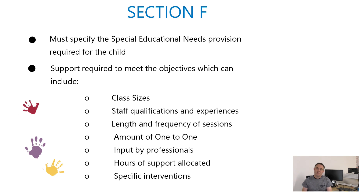The kinds of things that can be specified in section F include the size of classes — for example, if the child needs to be educated in a class of not more than six children, that should be specified. Staff qualifications and experience should be specified — for example, if the child is to receive a particular level of learning support assistance, what level is needed? Is it from someone newly trained or someone experienced? Does the LSA need a specific qualification in autism, or a particular qualification in speech and language to deliver the intervention?